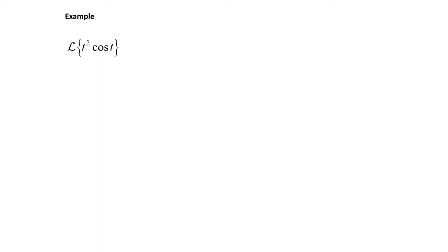Let's look at a second example. This time we have the Laplace transform of t squared times the cosine of t. For this one we don't have the option of using the translation theorem, so we have to use today's theorem dealing with the derivative of a transform. We have t squared, so our n value will be two. This is negative one squared times the second derivative with respect to s of the Laplace transform of the cosine of t.